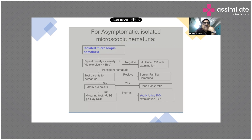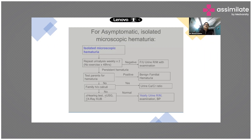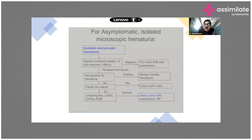If you find persistent hematuria, test the patient further. If that comes back negative, follow with urine routine microscopy after a week. Also get a urine calcium-to-creatinine ratio, and yearly urine routine microscopic examination along with blood pressure monitoring should be performed.